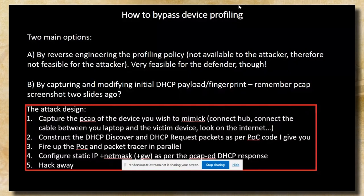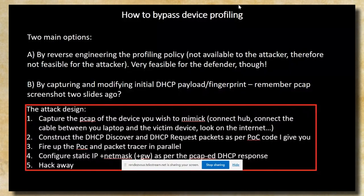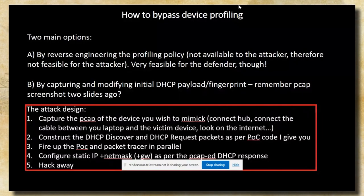The second step is constructing the DHCP Discover and DHCP Request packets using proof-of-concept code. You then fire up the proof of concept and a packet sniffer in parallel. The reason to have a packet sniffer running in parallel is to capture as many details coming from the DHCP server as possible — these details allow you to configure your IP stack with all the required attributes such as IP address, network mask, default gateway, DNS server, and whatever else. Then hack away.